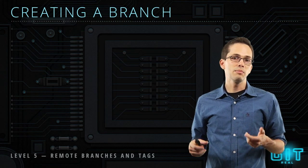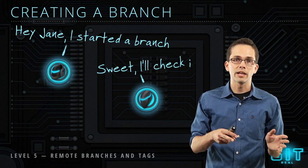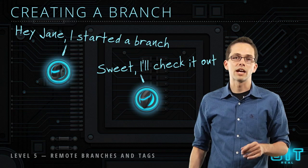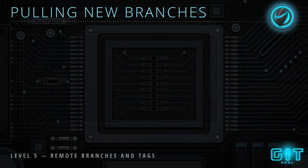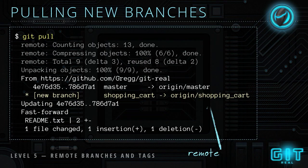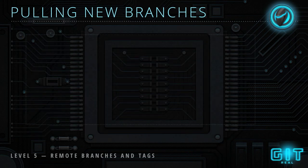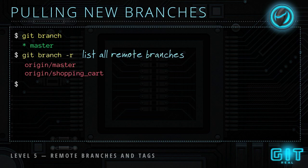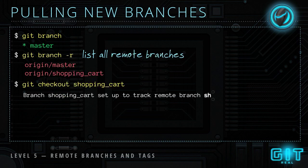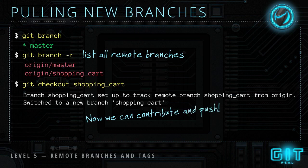We push it up to GitHub and tell a co-worker: 'Hey Jane, I started the remote branch for shopping cart — if you want to work on it, go ahead and grab it.' From Jane's perspective, the next time she does a pull it will show her that there's a new remote branch called shopping cart. If she does `git branch` she won't see it as a local branch yet, but with `git branch -r` she can see all remote branches. She then runs `git checkout shopping-cart` and it's automatically set up as a tracking remote branch, so she can make changes and push to that remote branch.